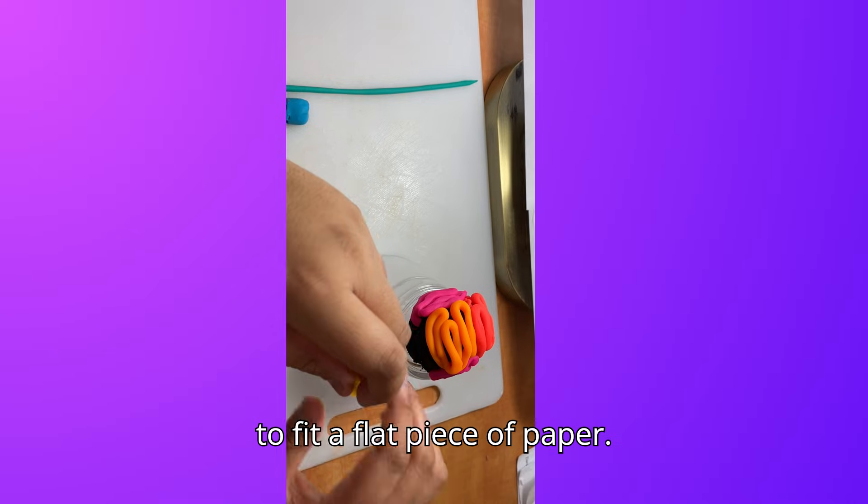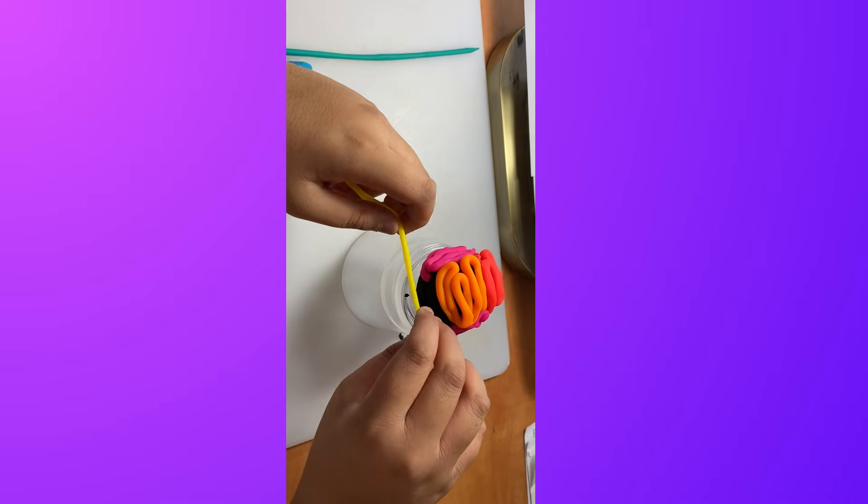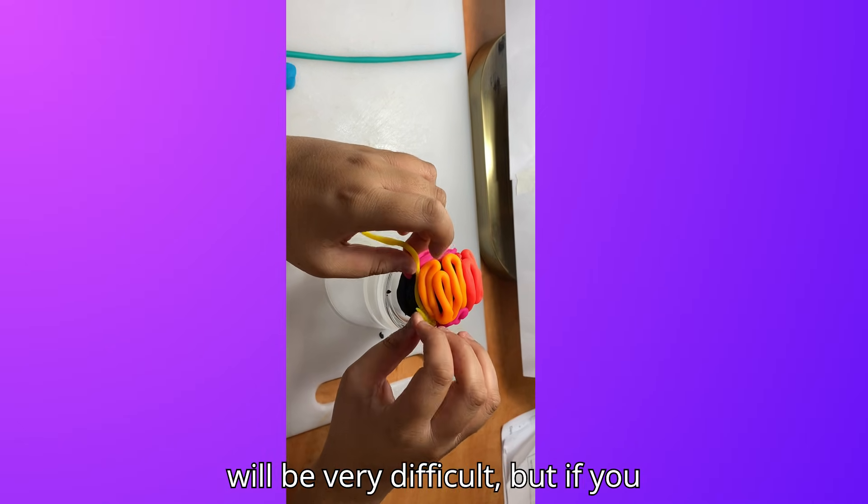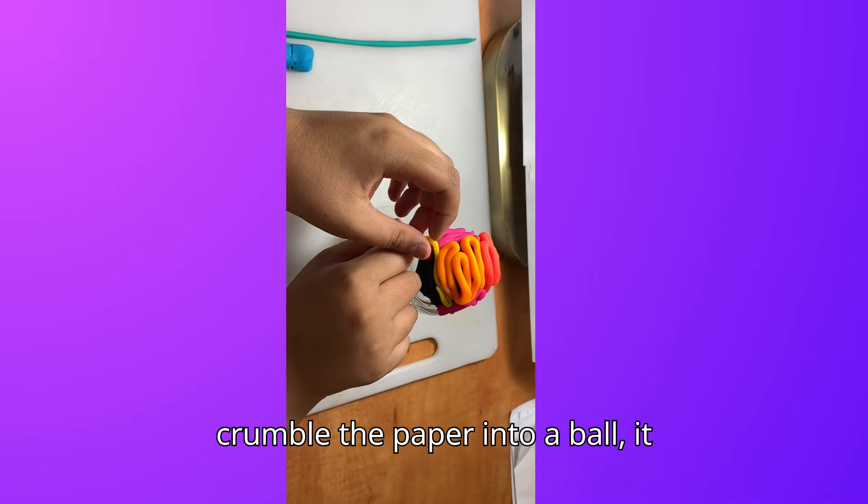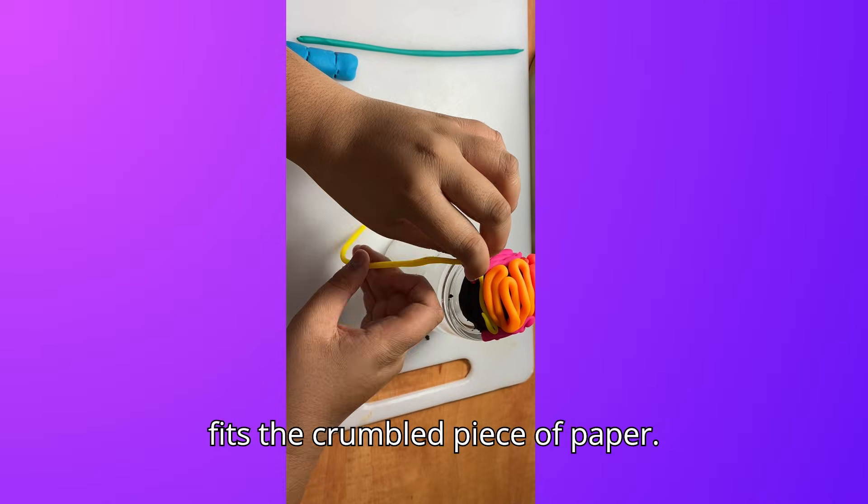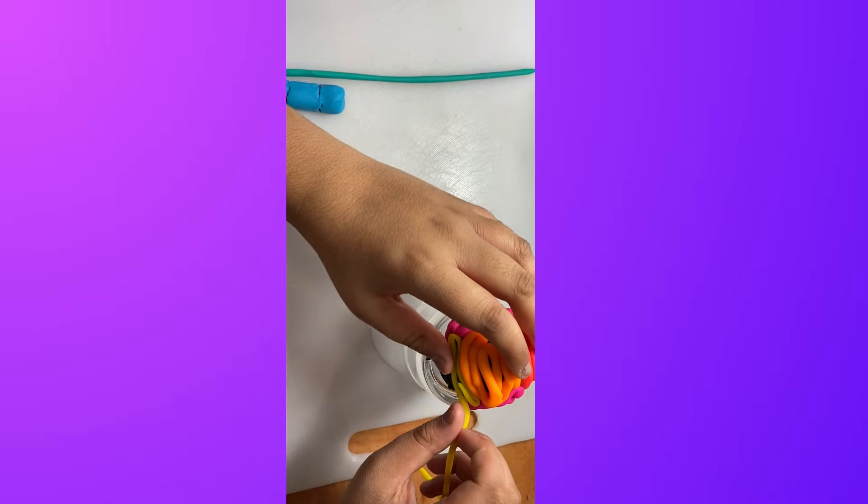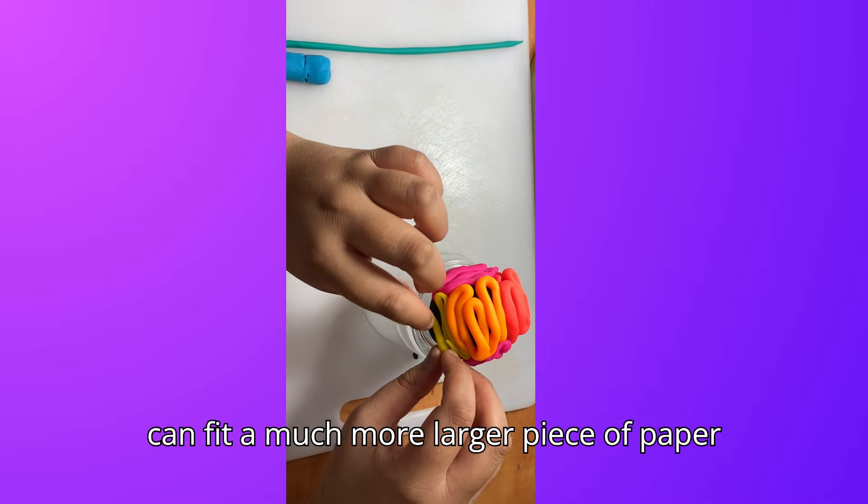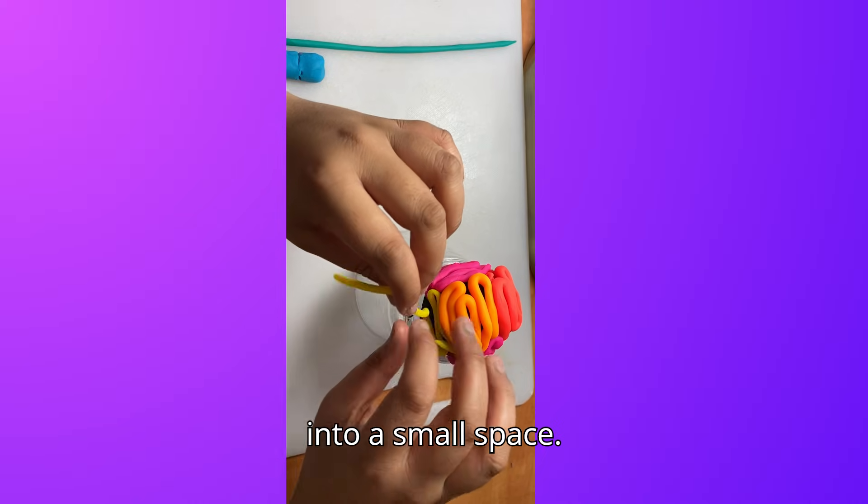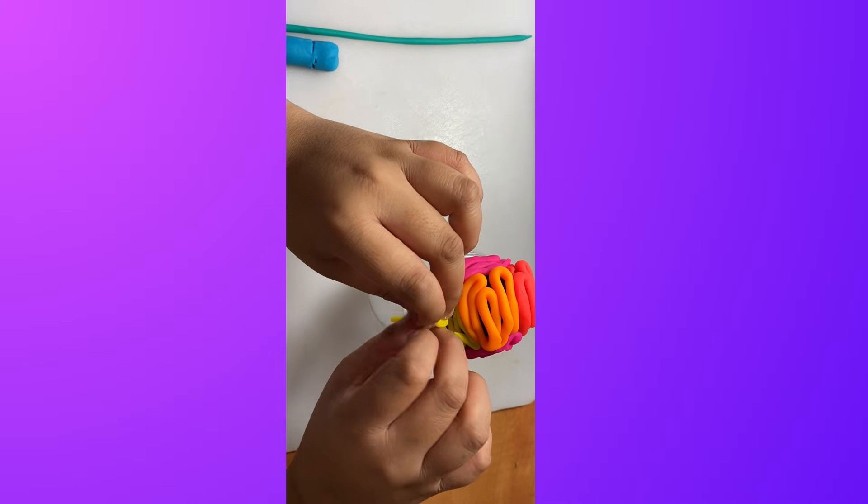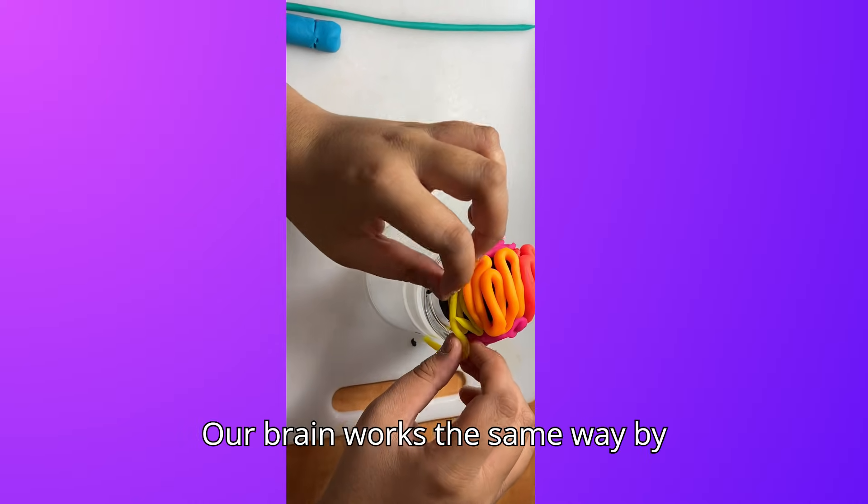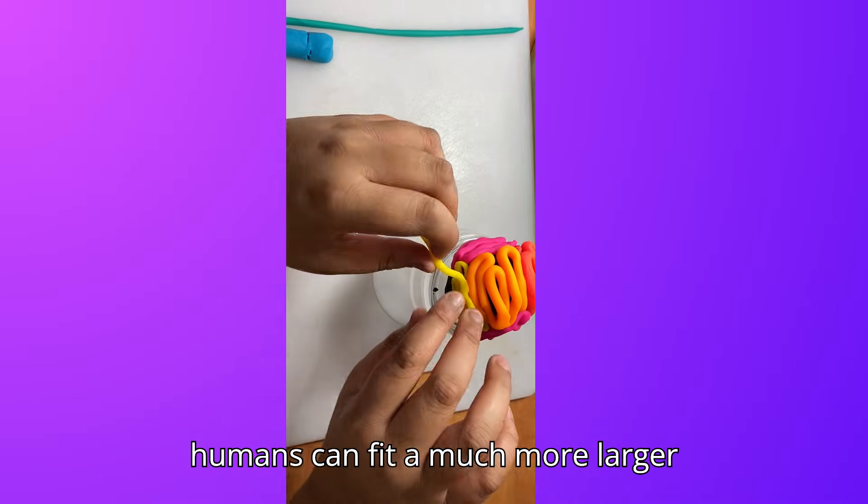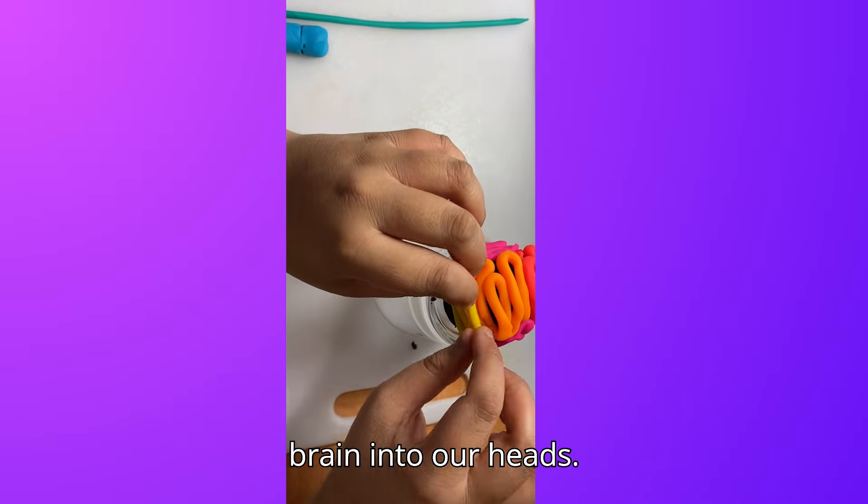Trying to fit a flat piece of paper in your head will be very difficult. But if you crumble the paper into a ball, it fits. The crumbled piece of paper has a lot of bumps and folds so you can fit a much larger piece of paper into a small space. Our brain works the same way by adding lots of bumps and folds so humans can fit a much larger brain into our heads.